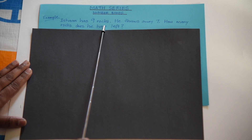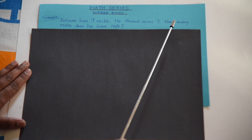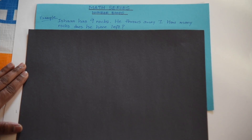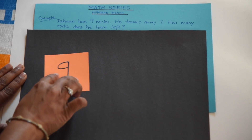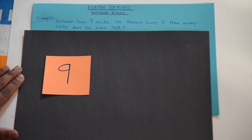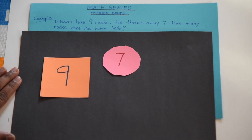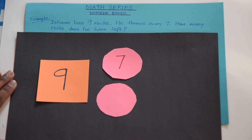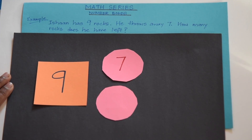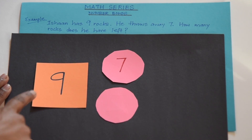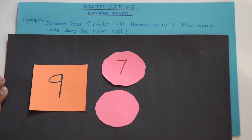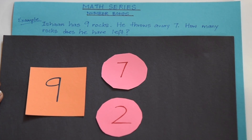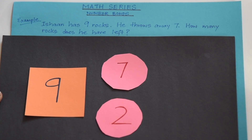Ishaan has 9 rocks. He throws away 7. How many rocks does he have left? 2. Let's do this with the help of number bonds. Ishaan has 9 rocks — that's the total. He threw away 7 — that's one part. How many rocks does he have left? That's the missing part, which means it's a subtraction problem. Do you remember the number bond of 9? 9 is made up of 7 and 2. So the answer is 2. The subtraction number sentence is 9 minus 7 equals 2. Great job.